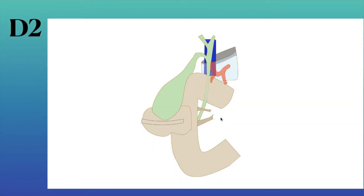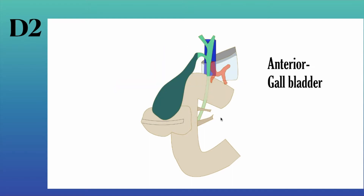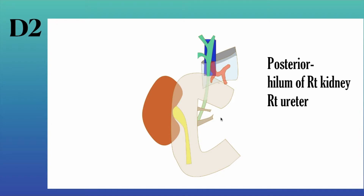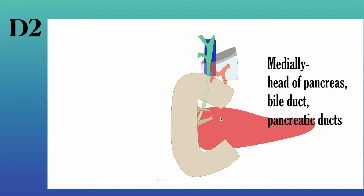The second part of the duodenum is related anteriorly to the right lobe of the liver and the gall bladder. Posteriorly to the hilum of the right kidney and the right ureter. Laterally to the ascending colon and hepatic flexure, and medially to the head of the pancreas, bile duct, and pancreatic ducts.